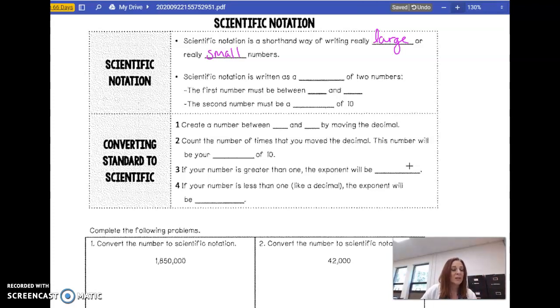Scientific notation is written as a product, so it's a multiplication problem of two numbers. The first number must be between 1 and 10. So anywhere from 1.0 to 9.999999. And the second number must be a power of 10. And that's what we were kind of introducing in the last lesson, a power of 10.